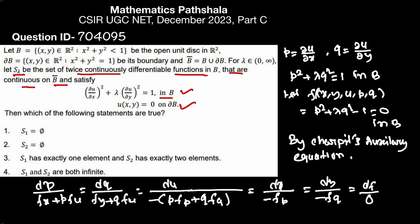Here we can see that F is only a function of p and q — there are no x, y, or u explicitly. So taking partial derivatives with respect to x, y, or u all give 0. Therefore we get dp = 0 and dq = 0 from the first two fractions.